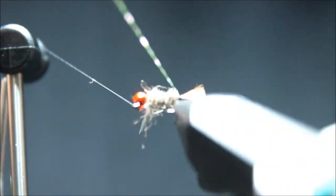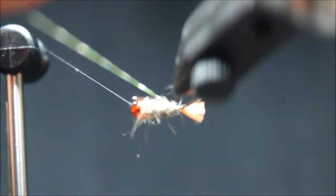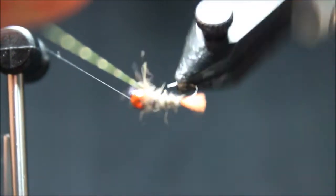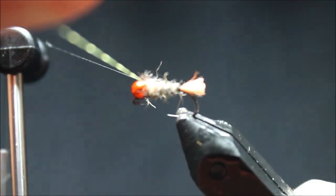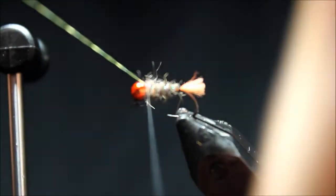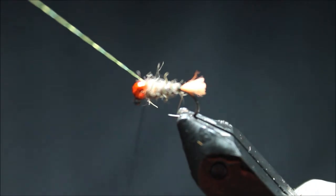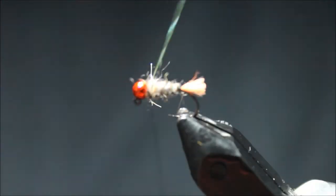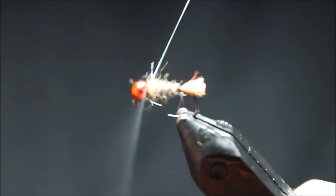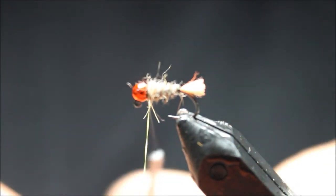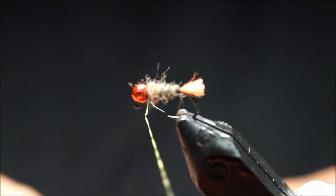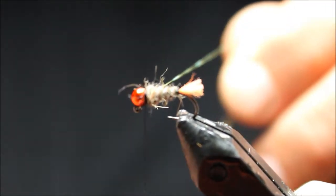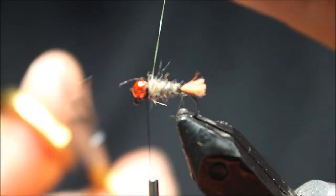So we've created a taper body with the dubbing and now we're going to rib that body all the way up to the bead and take our thread behind it a couple times, and in front. A buddy of mine Gordon likes to take the material and roll it around the thread to secure that.